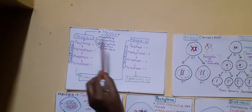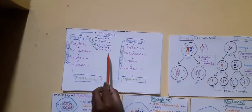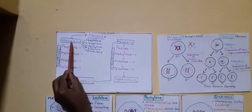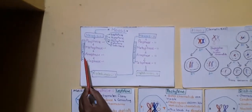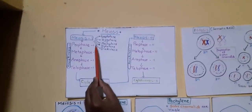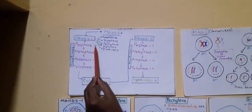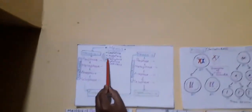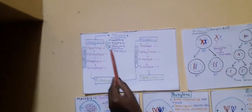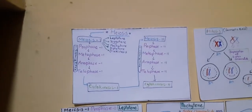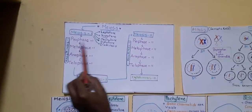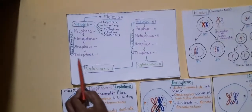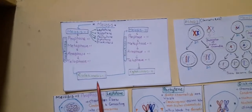During these phases, division of the nucleus takes place — this is called karyokinesis. Prophase I is the longest stage and is classified into five sub-stages: Leptotene, Zygotene, Pachytene, Diplotene, and Diakinesis. After karyokinesis is completed through Telophase I, the cell goes into Cytokinesis I — division of cytoplasm.